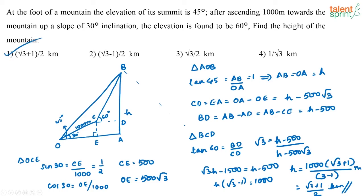We considered three triangles: OCE, AOB, and BCD. Using these three triangles we found the height of the mountain. The answer is (√3 + 1)/2 kilometers — option 1.